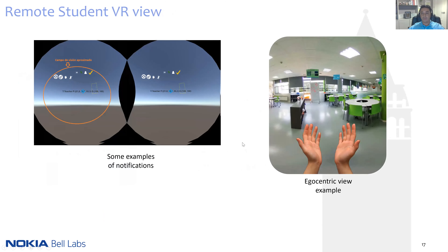On the right side, you can see an example of the egocentric view, which is composed by the 360 video of the classroom plus the hands of the user. On the left side, we can see a Unity scene where we are visualizing some events and coordinates that we got from the machine learning submodule.